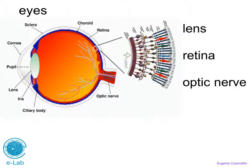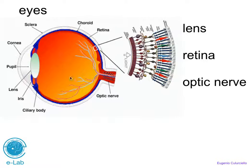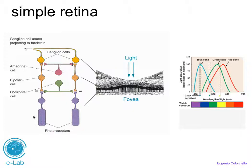One interesting thing to note about the retina is that it is inverted. All the photoreceptors are in the back of the eye, so light has to travel through all the other cells to reach them. All the output from the retina — the ganglion cells — is on top of the retina, and it gets conveyed by the optic nerve to the outside.